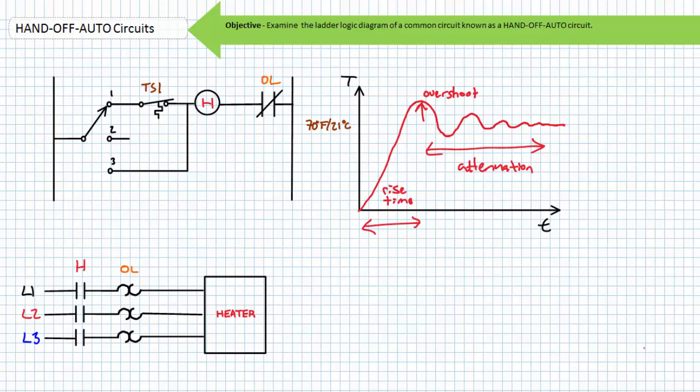Much, much later lectures will discuss fine-tuning of the response of similar circuits using proportional integral derivative control, sometimes called PID control. Characteristics like rise time, overshoot, and attenuation can be tuned to fit the process.